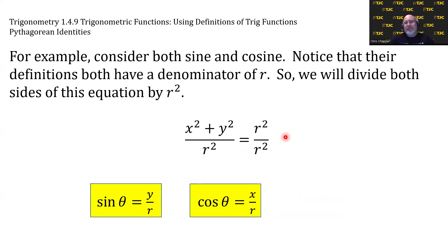On the left, we can split into two fractions. You can always split a fraction into two fractions across a plus or minus in the numerator. So we get x²/r² + y²/r² = r²/r².